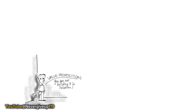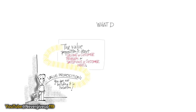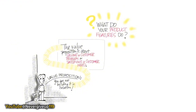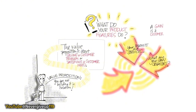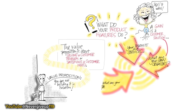Value proposition is not something you're building in isolation. While it's about solving a customer problem or need, it really consists of three components. The easy one for most entrepreneurs to talk about is what product features or services you're providing. But there are actually two more important components: what gain are you creating for customers, and what pain are you solving for them?